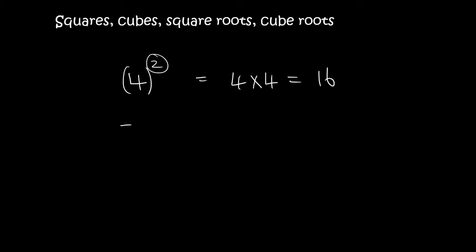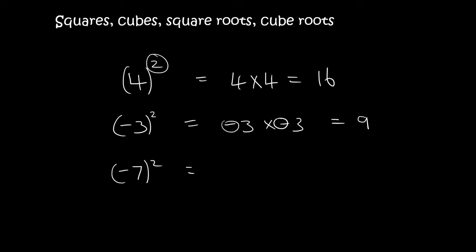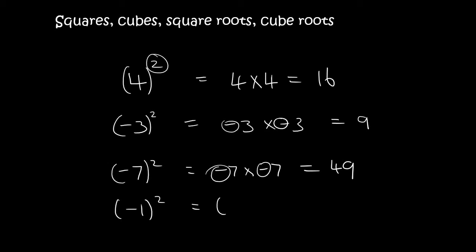If I say minus 3 with a 2 there, it means minus 3 squared, and that means minus 3 times minus 3. Now a negative and a negative is a positive, so that is 9. So negative 7 squared means minus 7 times minus 7 — a negative and a negative is a positive. If I have minus 1 squared it means minus 1 times minus 1, which is 1.